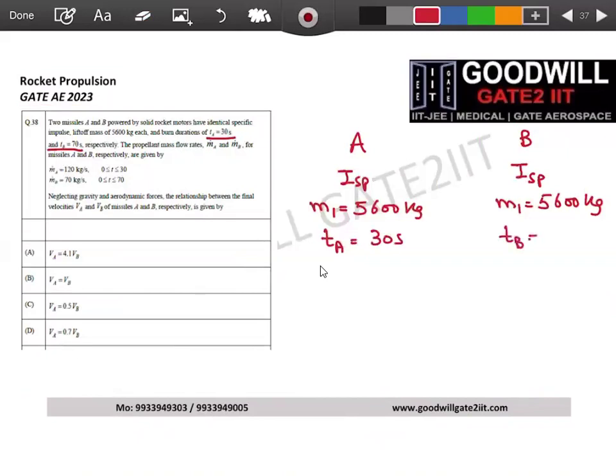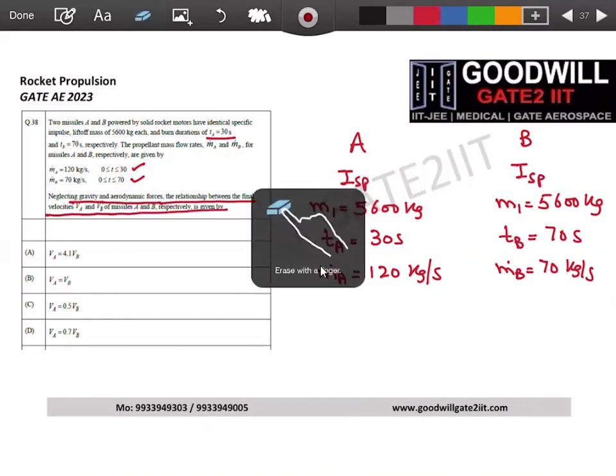So rocket A burns for a time of 30 seconds and B burns for a time of 70 seconds respectively. The propellant mass flow rates for missiles A and B respectively are given. For 30 seconds mass flow rate of A is 120 kg every second. For rocket B, your mass flow rate is 70 kg per second and you're burning for 70 seconds. Neglecting gravity and aerodynamic forces, the relationship between the velocity A and B is given as the final velocity relation.